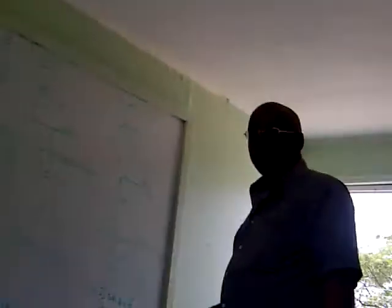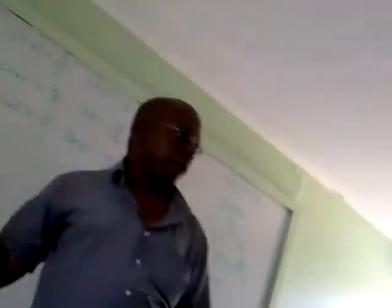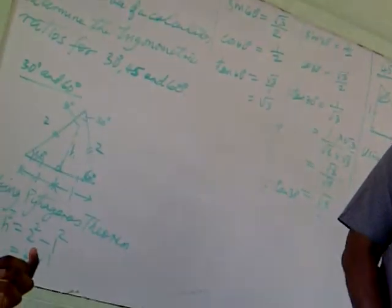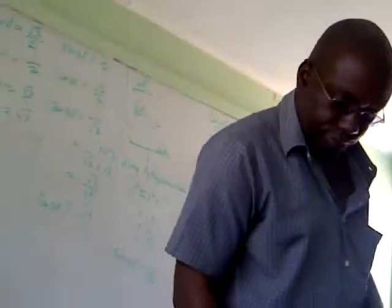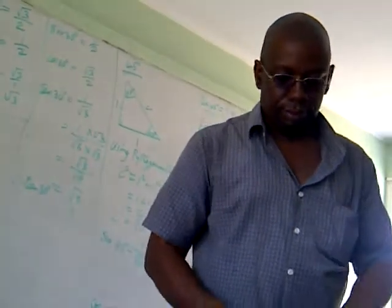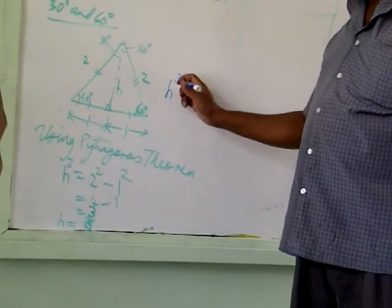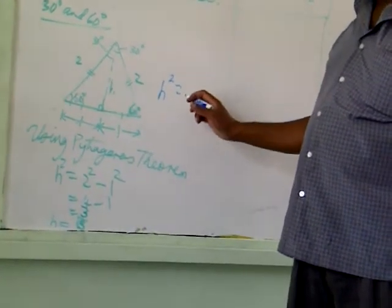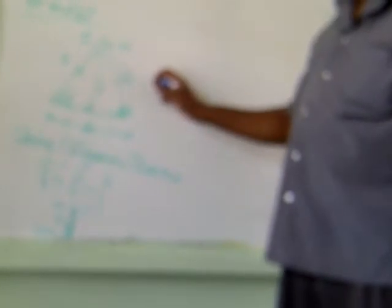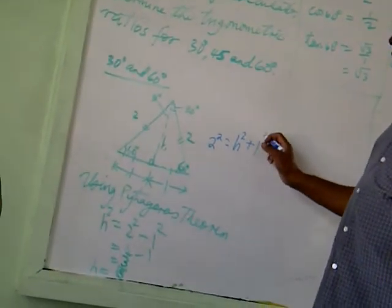The square of the hypotenuse is equal to the sum of the squares of the two sides. So right here, you would have the hypotenuse squared equal to 8 squared plus 1 squared.